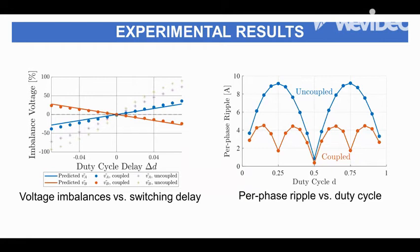These plots similarly show this across a range of duty cycle delays. The coupled inductor converter has much lower steady state flying capacitor voltage imbalances than the uncoupled one. And moreover, we're showing that the ripple is cancelled at several duty cycles when a coupled inductor is used, therefore improving the efficiency at many duty cycles.